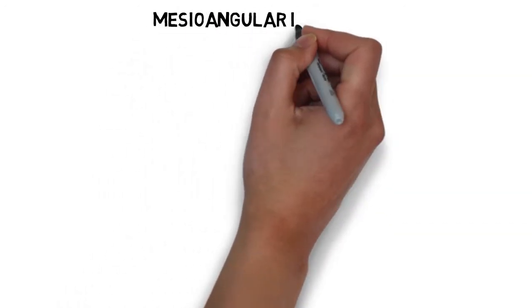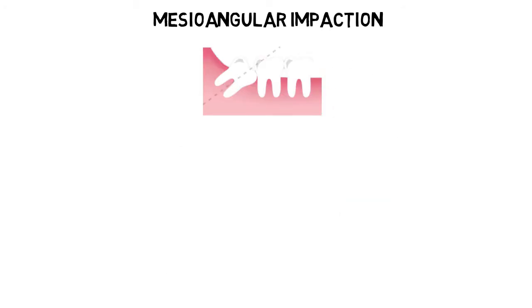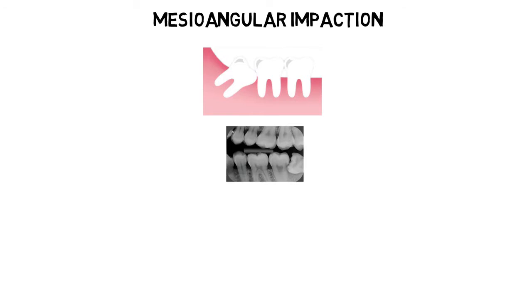The first is the mesoangular impaction, in which the crown of the impacted third molar is tilted in the mesial direction towards the adjacent second molar. This is the most common type of lower third molar impaction, accounting for about 43% of the total lower third molar impaction cases, and it is also the least difficult to extract.